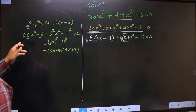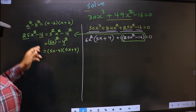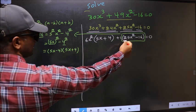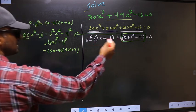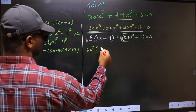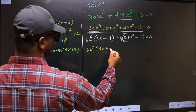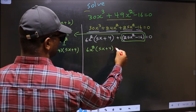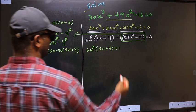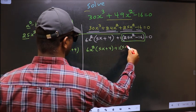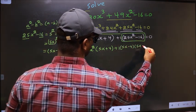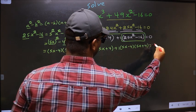Now in place of the quadratic we write this factored form. So the equation becomes 6x²(5x + 4) + 1·(5x - 4)(5x + 4) = 0.